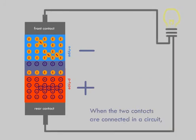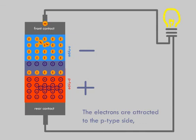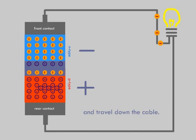When the two contacts are connected in a circuit, the electrons are attracted to the P-type side and travel down the cable. The result is electrical current.